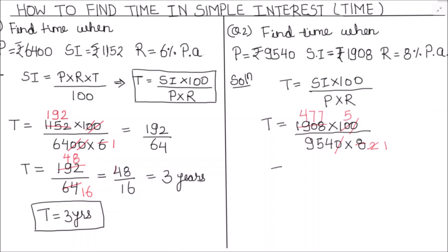We got T equals 477 times 5 divided by 954. This comes out to be 2385 divided by 954, which is equal to 2.5 years.